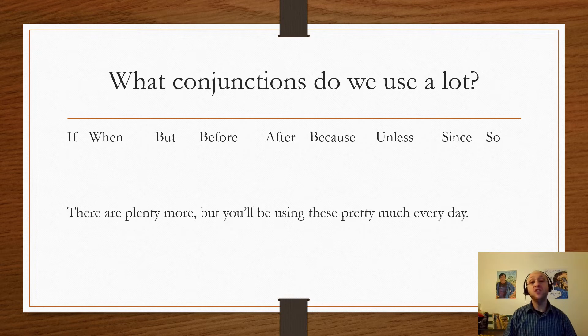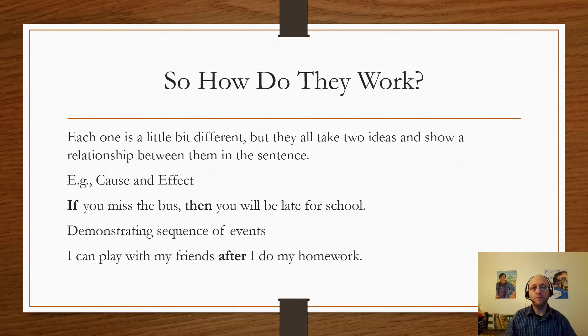Like I was saying, these conjunctions establish a relationship between the two ideas. One example, when we use 'if then,' that's a cause and effect: if you miss the bus then you will be late for school, or if you do your homework then I can take you out for ice cream.